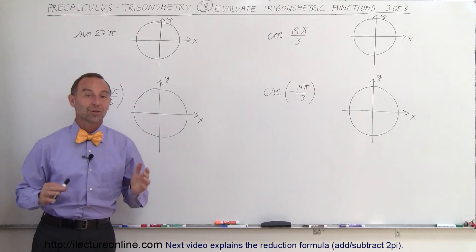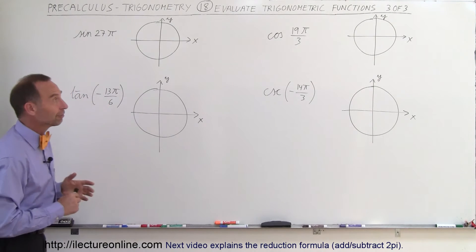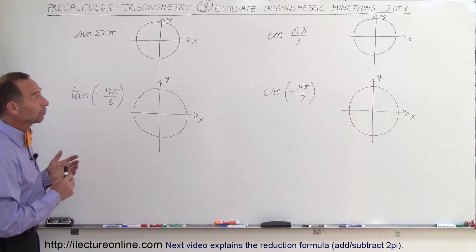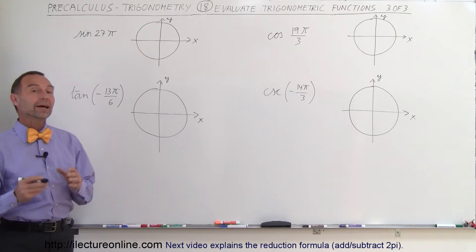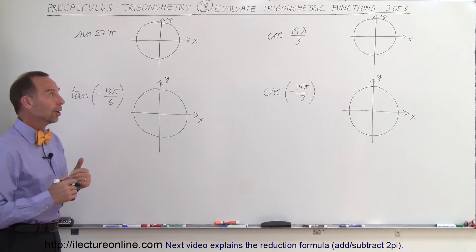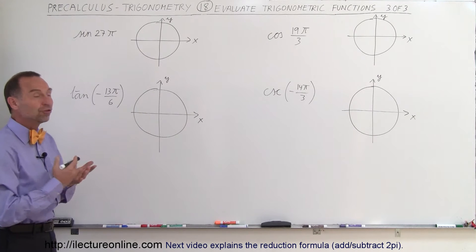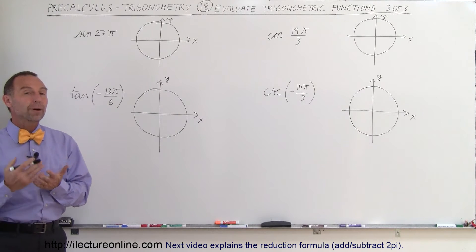Welcome to Electron Line, and here's the third set of some trigonometric functions that we need to evaluate. Now in this set, the angle is usually more than 2π.